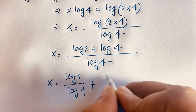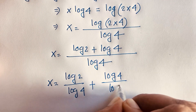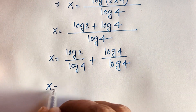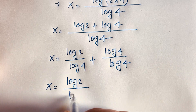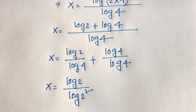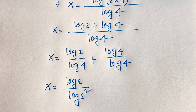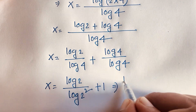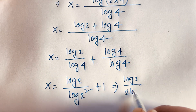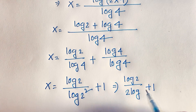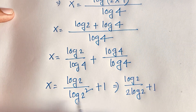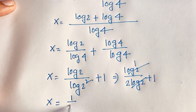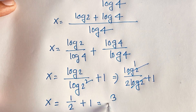Dividing both terms by log 4: x equals log 2 over log 4 plus log 4 over log 4. The second term cancels to 1. Since 4 equals 2 to the power 2, log 4 equals 2 log 2, so log 2 over log 4 equals log 2 over 2 log 2, which simplifies to 1/2. Therefore x equals 1/2 plus 1, which is 3/2.